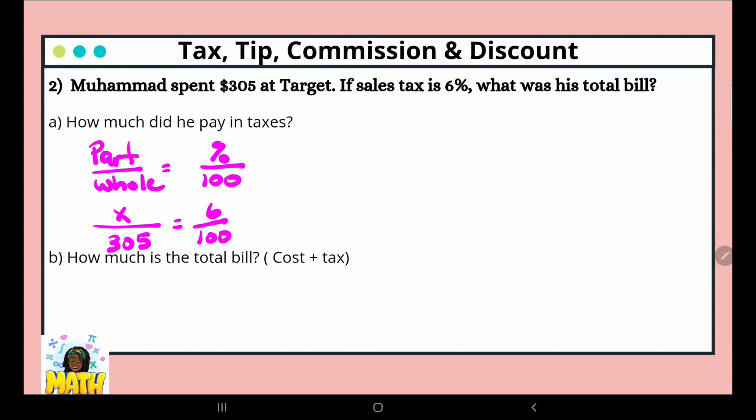We cross multiply. 305 times 6 and 100 times x gives us 100x equals 1,830. And we're going to divide both sides by 100. So we have x equals $18.30. Dividing by 100 is the same thing as moving your decimal two places to the left, so 1, 2 gives me $18.30. So that's the amount of my tax.